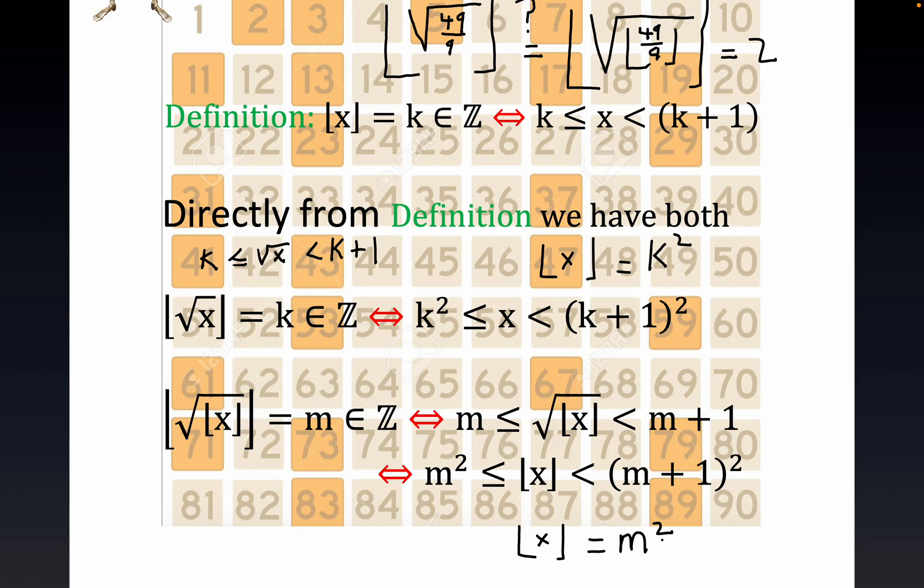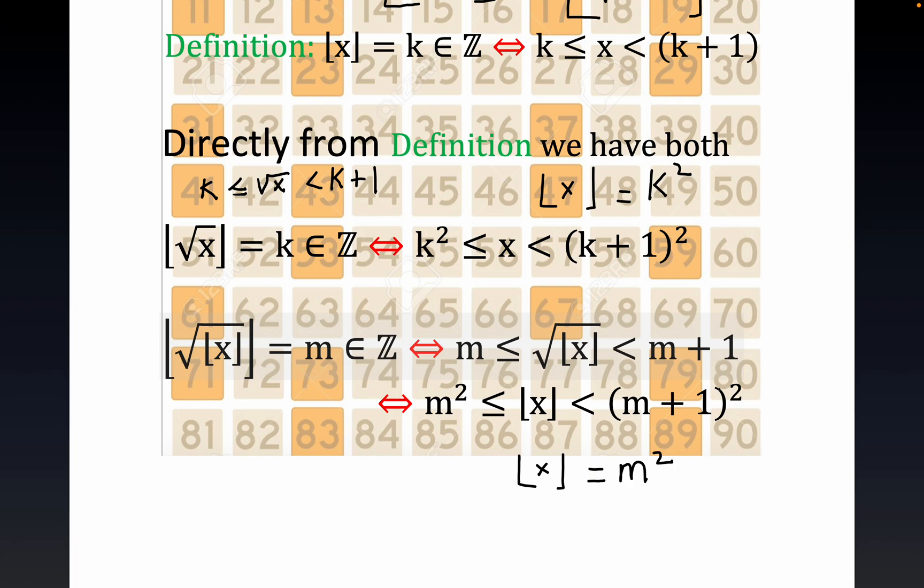We wrote up here it was k², and here we wrote it's m². So this certainly implies that these two statements here imply that m is equal to k.